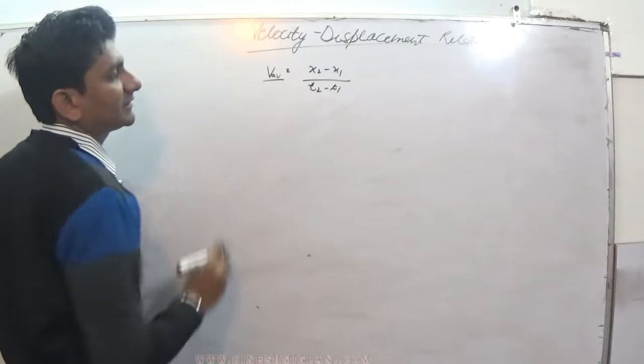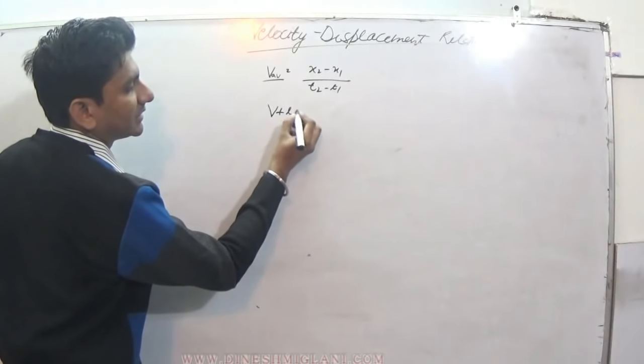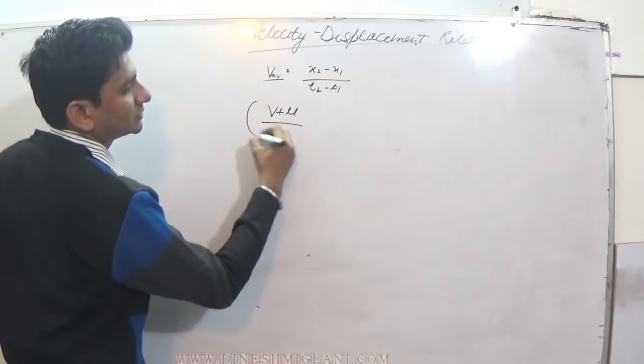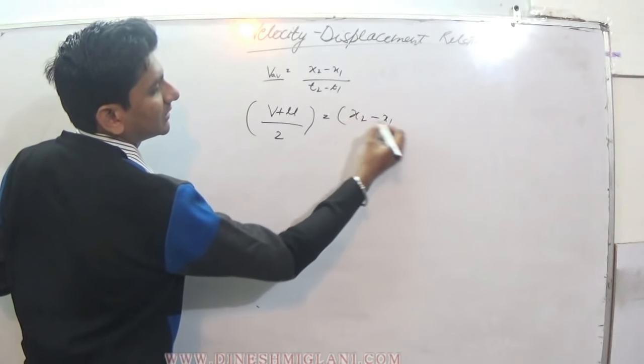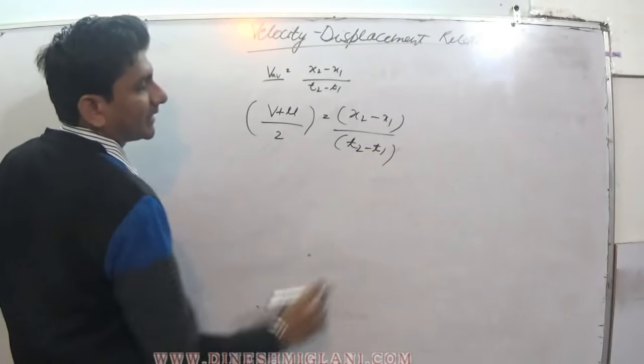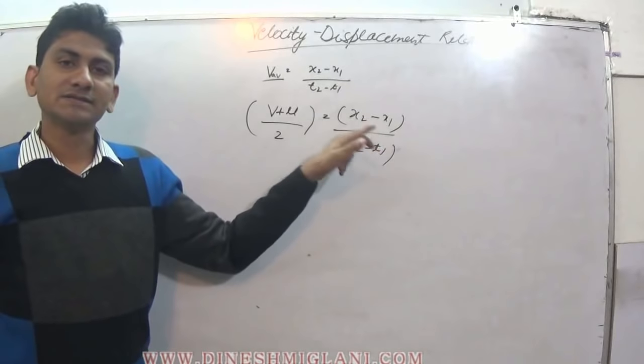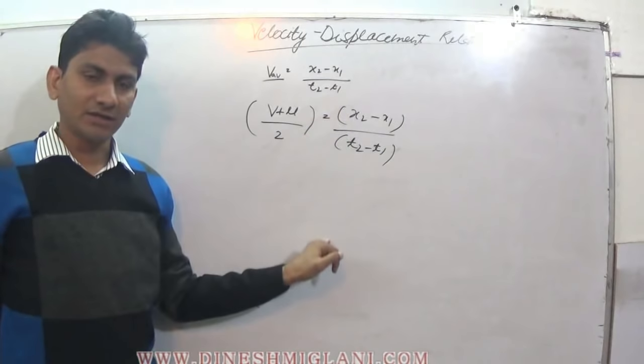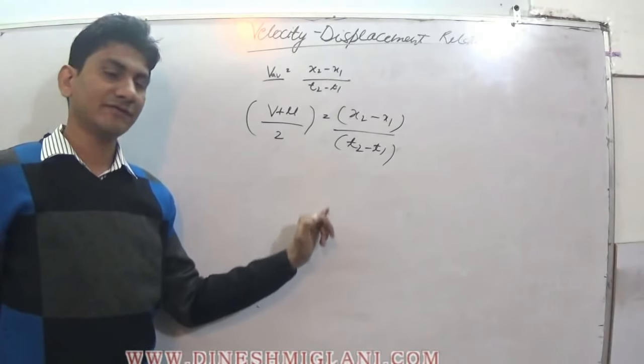Velocity is, this is again the average. What is this average velocity? It will become v plus u by 2. It is equal to x2 minus x1 by t2 minus t1. Again, x1 is the initial location, x2 is the final location, t1 is the initial time, and t2 is the final time.